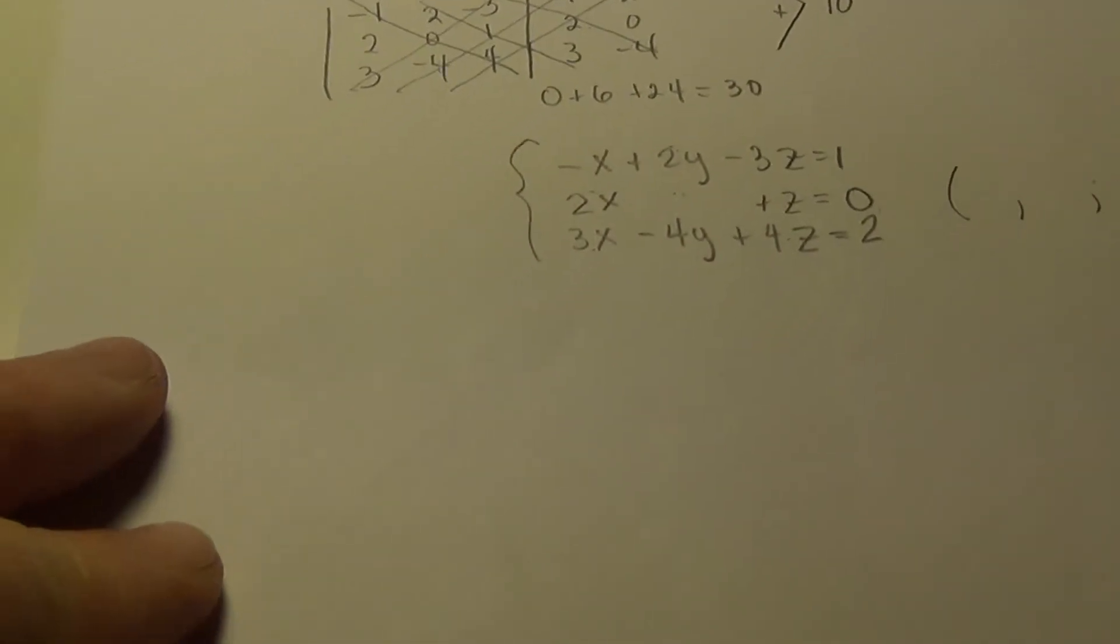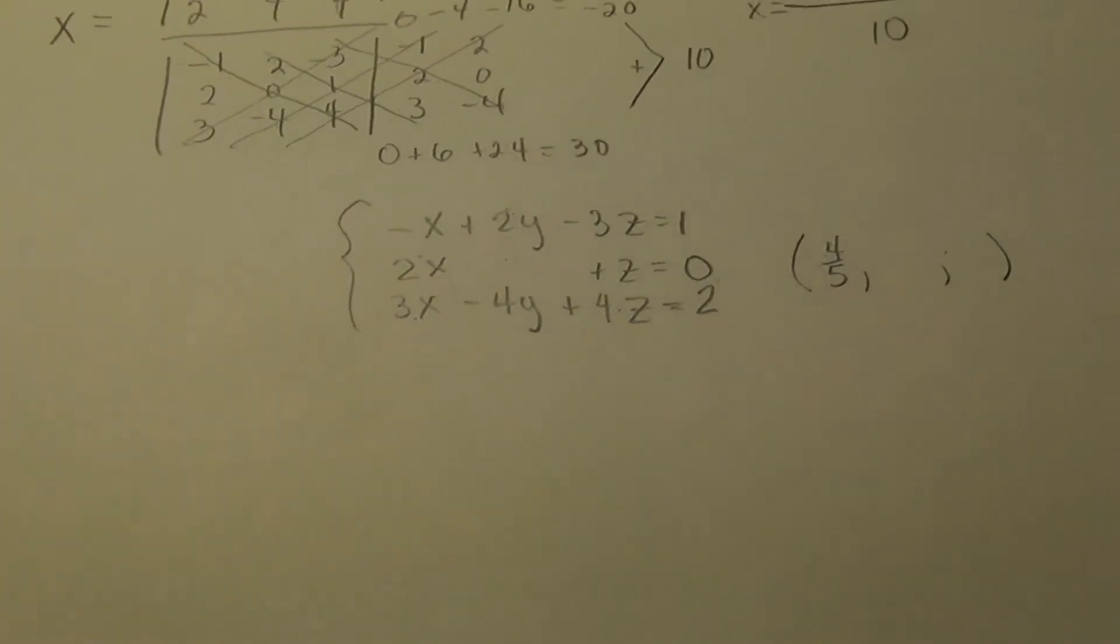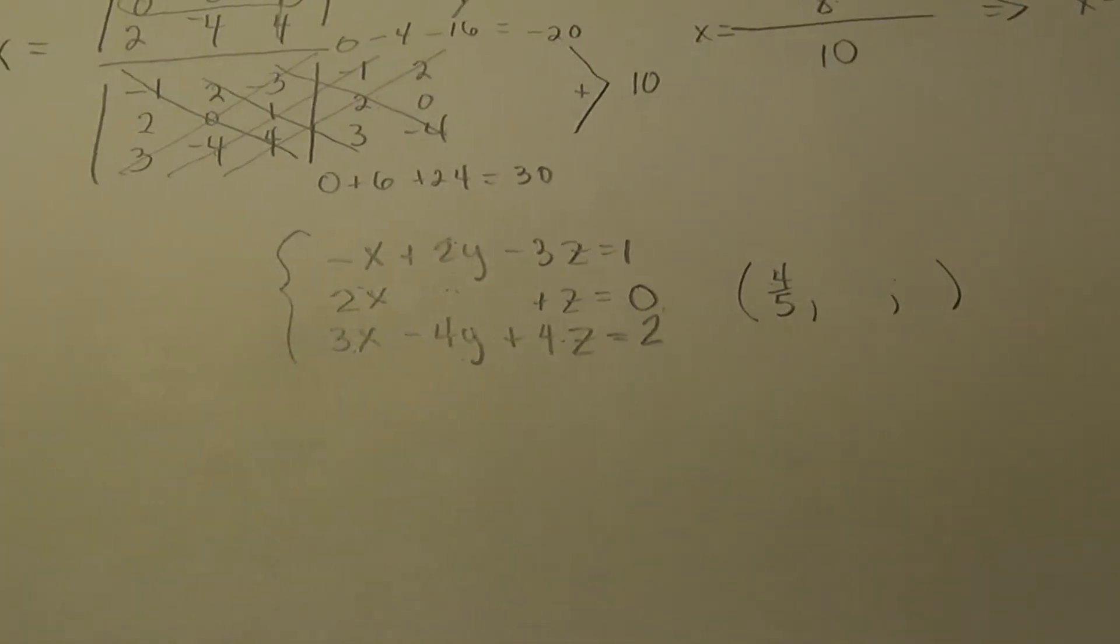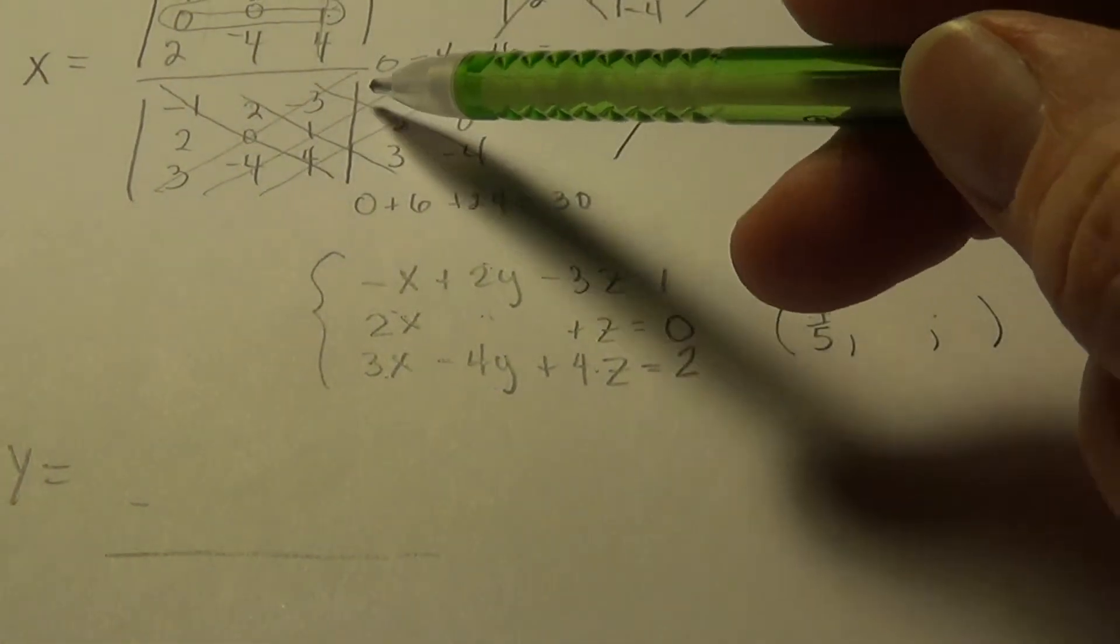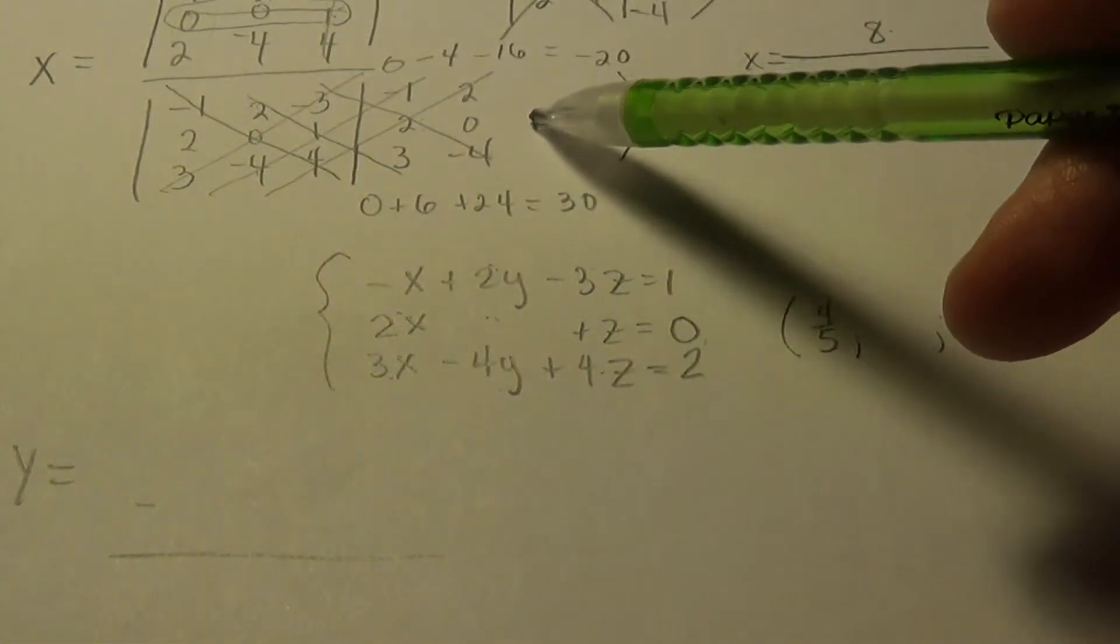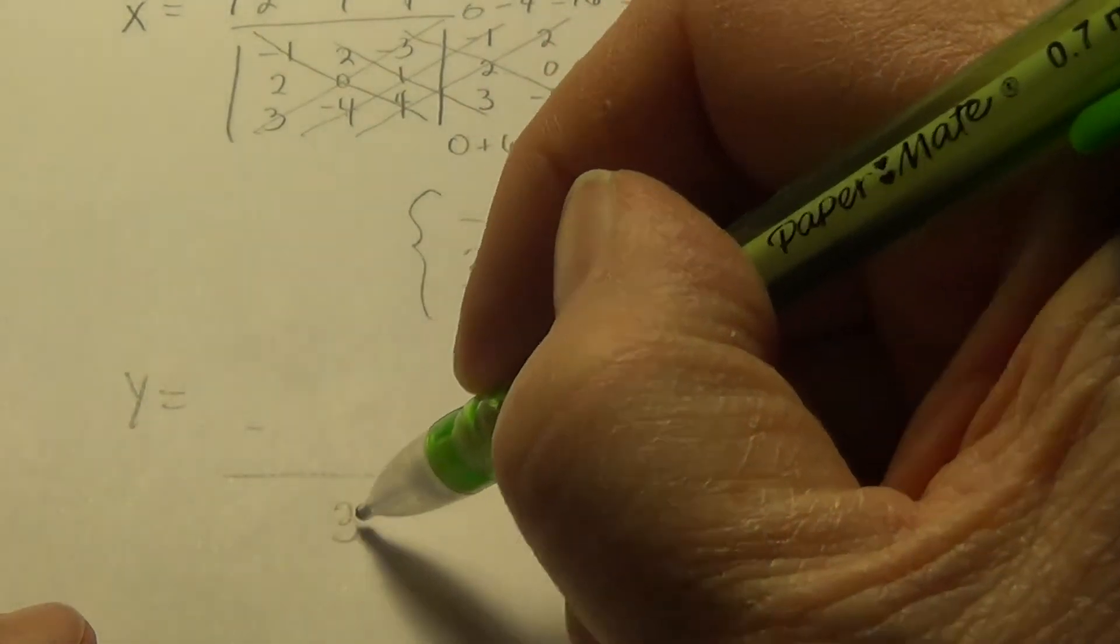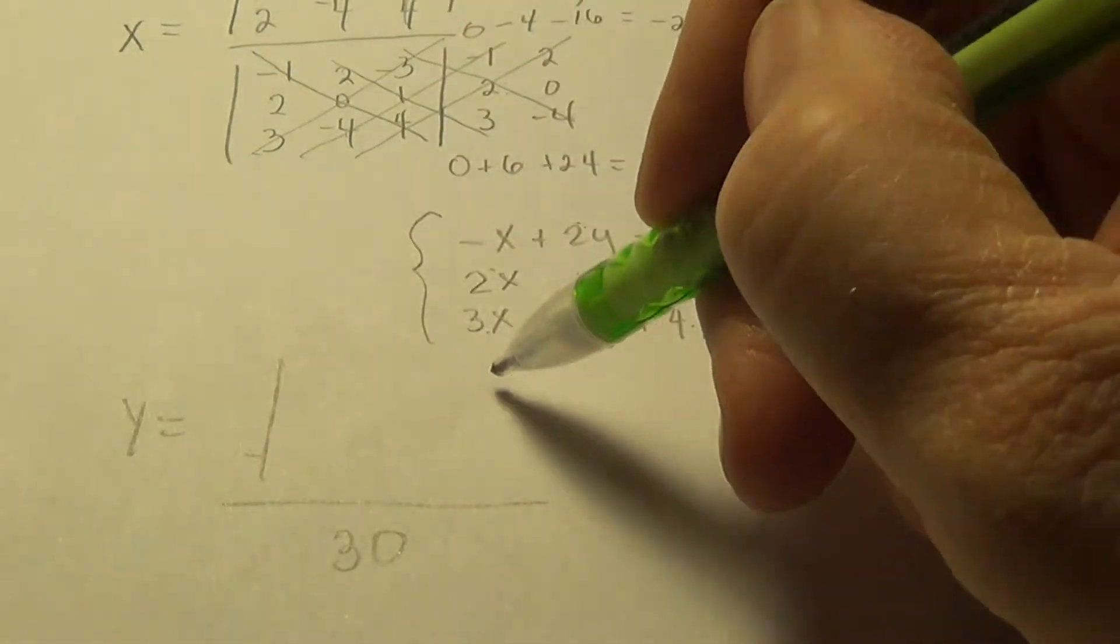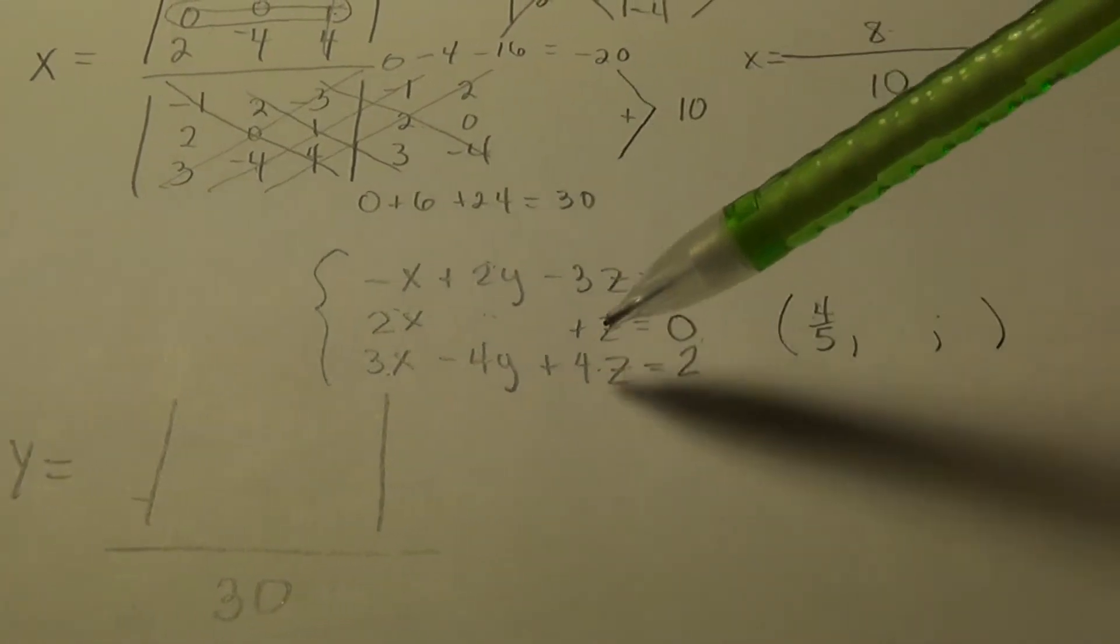All right. So that was our x. So down here in my x position, I put 4 fifths. All right. Let's set up our y. And we don't have to do the bottom matrix again because it's going to be identical to the x. It's the coefficient matrix. It's going to have the same determinant every time. So we have the 30 on the bottom. So let's set up the top for the y. Can you do it?